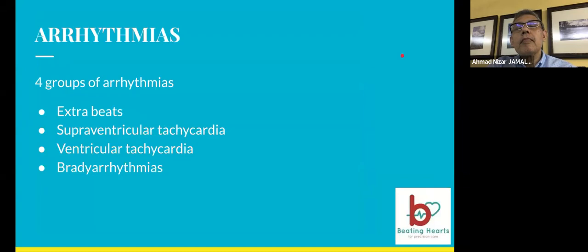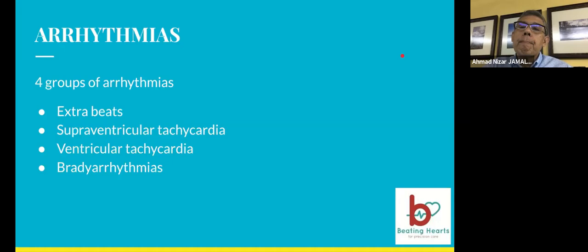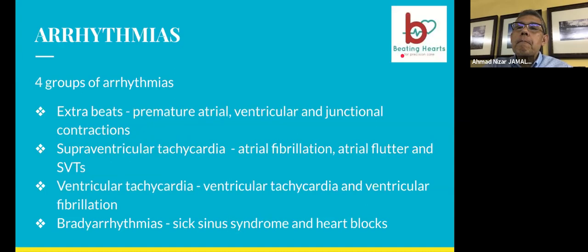There are four groups of arrhythmias: ectopics, supraventricular tachycardia, ventricular tachycardia, and bradyarrhythmias. In ectopics, we have premature atrial, ventricular, or junctional contractions. Basically, any part of the heart can transmit an electrical impulse — so any part that fires an extra beat becomes a premature beat.